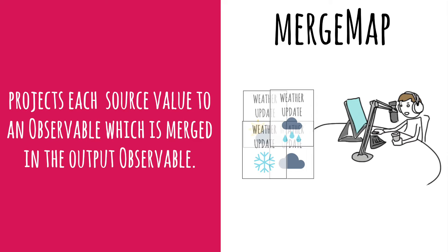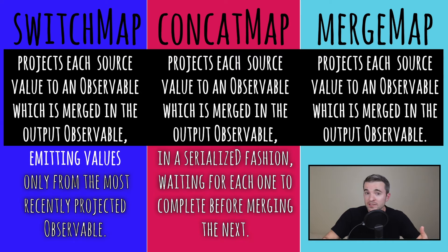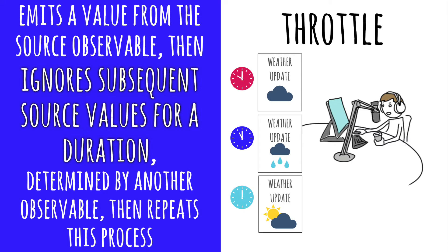If a new report comes in while the announcer is still reading and his response is to somehow read both at the same time, then we have mergeMap, because mergeMap projects each source value to an observable which is merged in the output observable. MergeMap is a more basic version: switchMap starts the new one as soon as it comes in, concatMap only switches after the first is finished, and mergeMap doesn't do anything special — as long as another one comes in, it gets read too, both going at the same time. If the announcer reads the latest report every hour on the hour, observing a clock as another source, he represents throttle — which emits a value from the source observable, then ignores subsequent source values for a duration determined by another observable, then repeats.